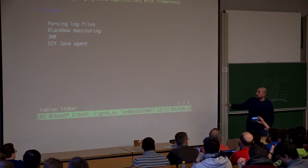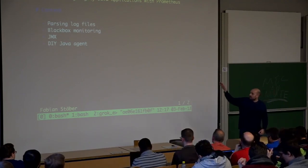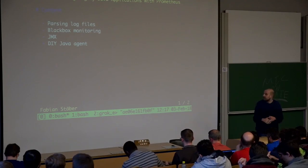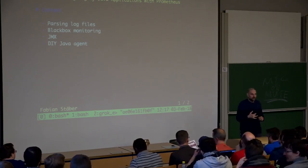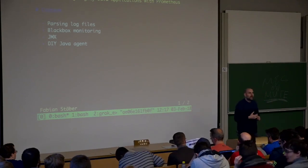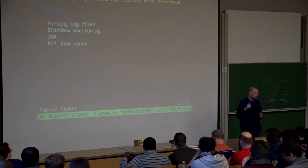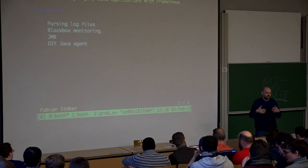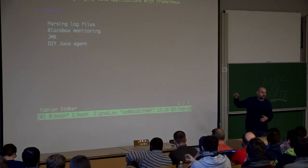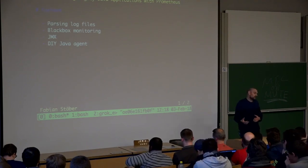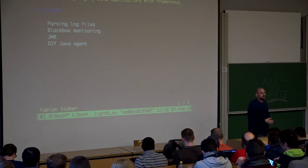To wrap up: within the last half hour we went through four ways of monitoring legacy Java applications — parsing log files, the black box exporter, the JMX exporter, and writing your own Java agent. As I said at the beginning, all of those are workarounds. The best thing you can actually do is use the Prometheus client library for Java and put your metrics directly in your source code — do that whenever it is possible. All of those approaches are only for when you cannot edit the source code. Thanks for listening.